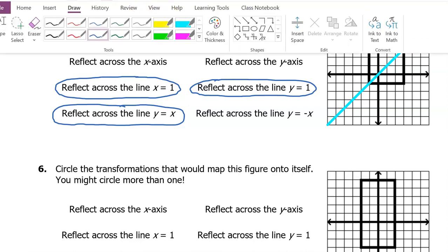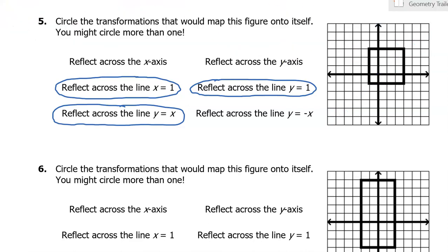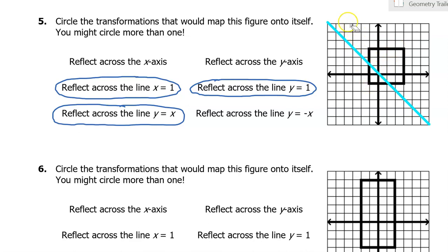What about the line Y equals negative X? That's also a diagonal line, but it goes downhill from left to right. Does this line split the square right down the middle? No — the middle of the square would be more over here. You can see that there's a lot more of the square on one side of the line than the other. So these are not mirror images of each other, and we will not circle that one.